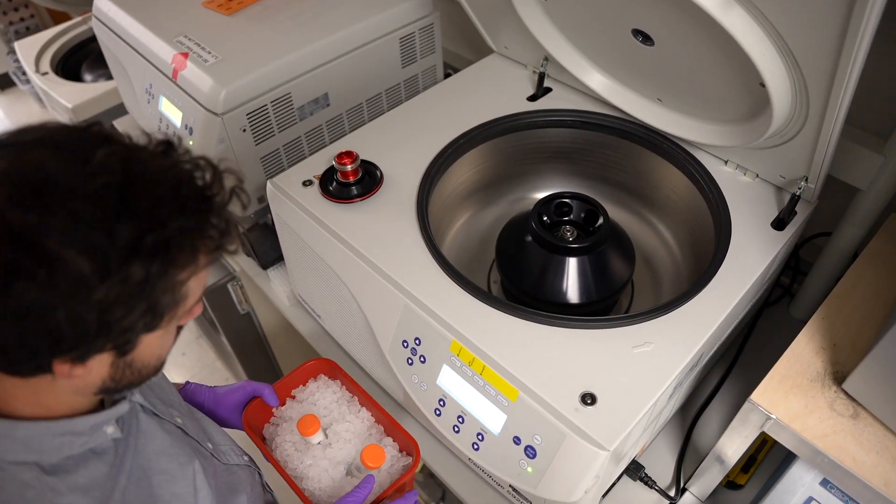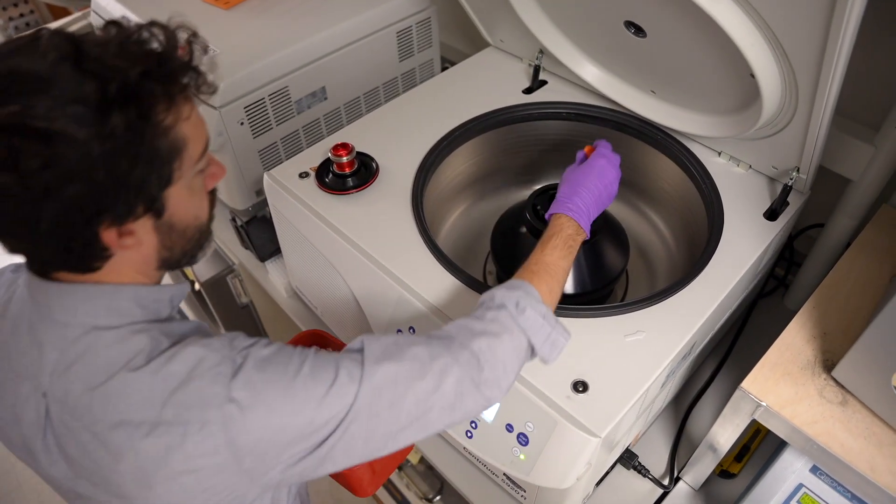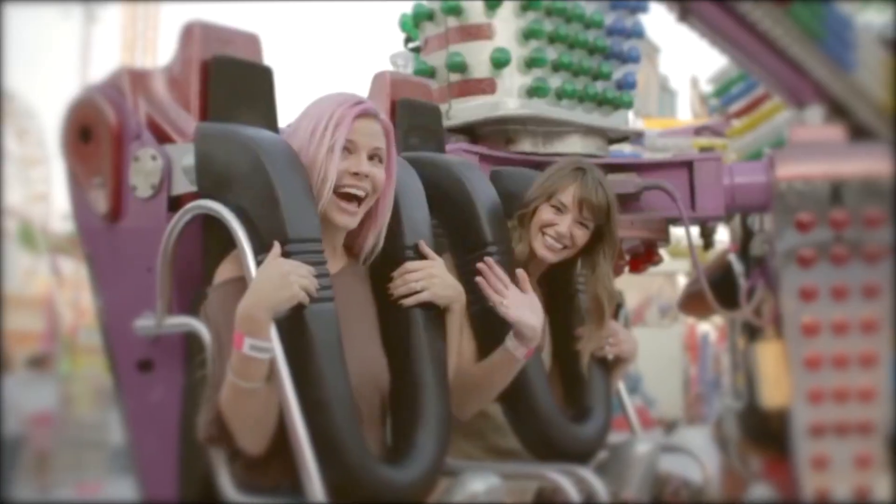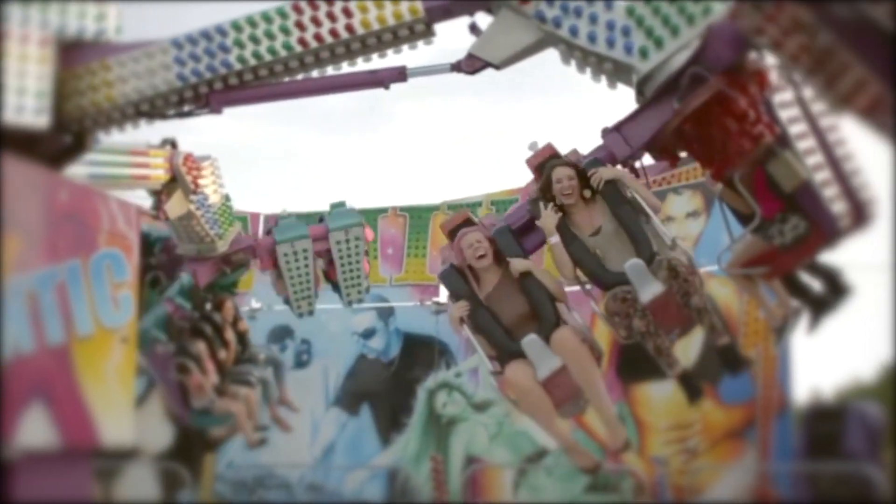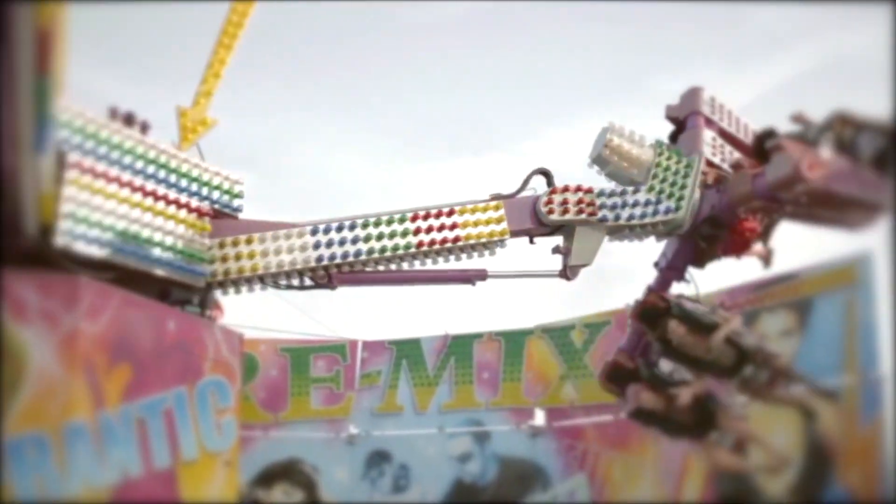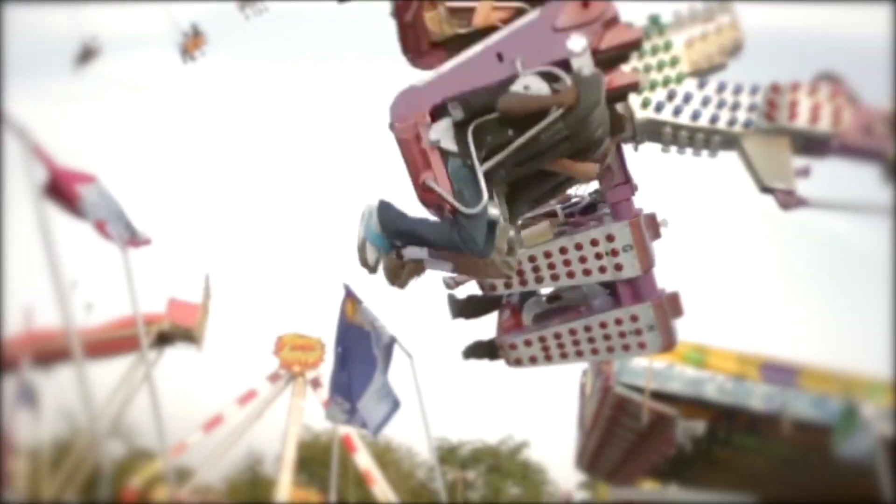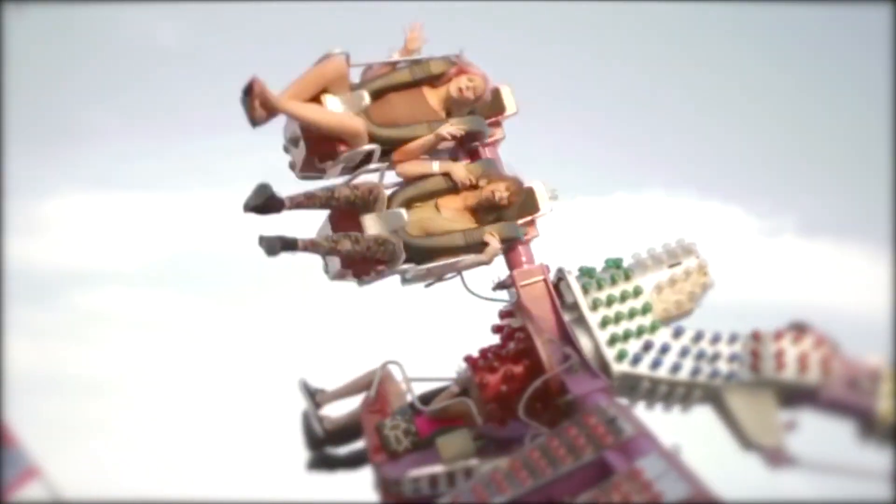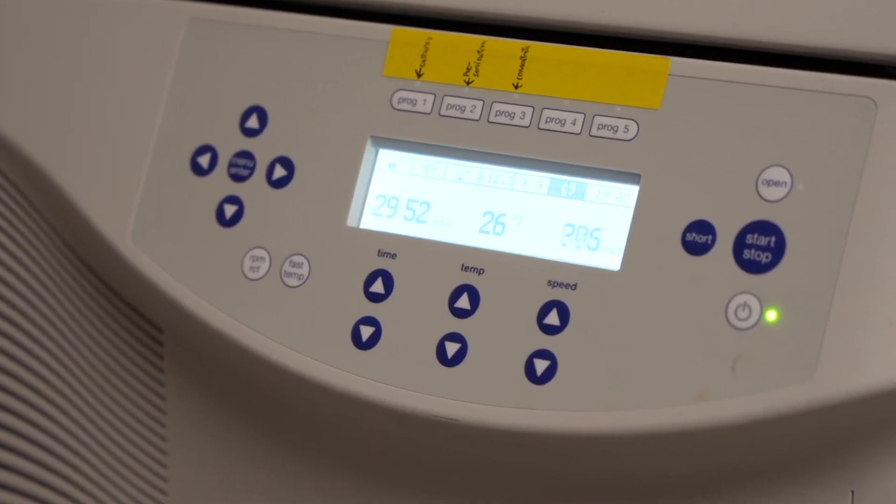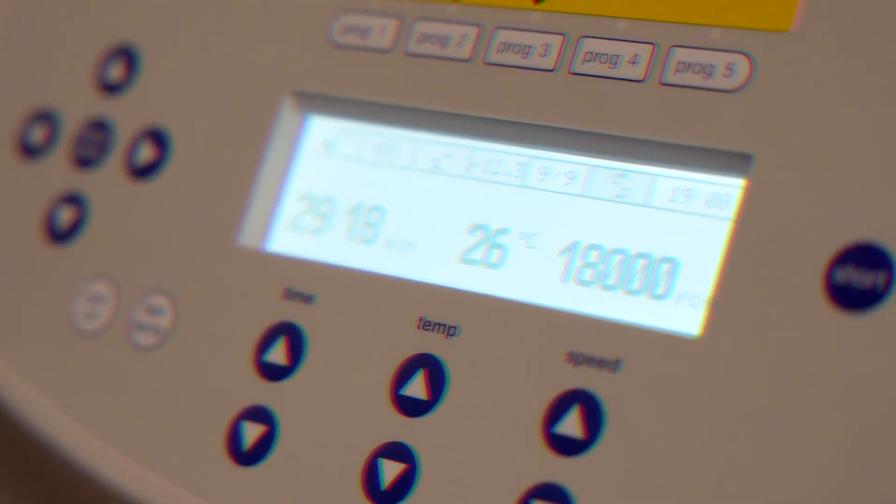We use a centrifuge to spin our samples at super high speeds. If you've ever been inside a spinning ride at an amusement park, you know exactly what's happening here. The spinning creates a force that mimics gravity, except that it pushes outward from the spinning rotor, instead of moving down towards the Earth. In this case, the force we are applying to our broken up cells is about 18,000 times stronger than the gravity you feel on Earth.